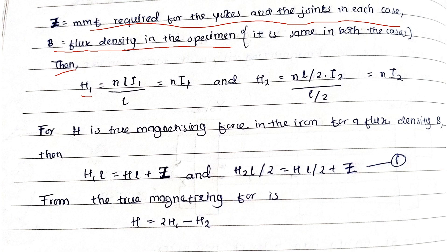H₁ × L = H × L + Z, and H₂ × L/2 = H × L/2 + Z. From these two equations, the true magnetizing force is: